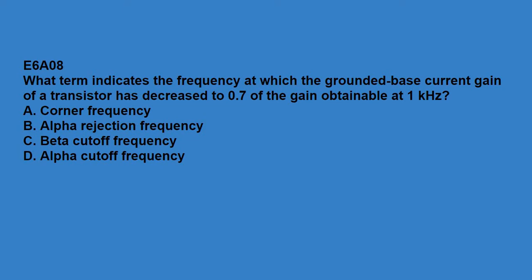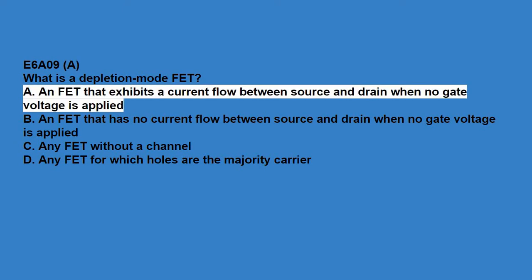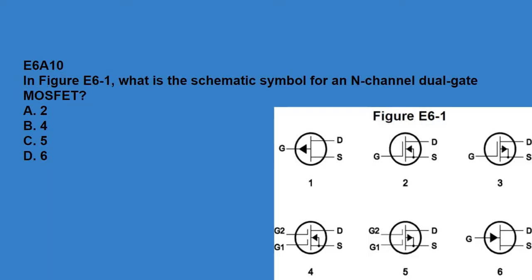E6A08: what term indicates the frequency at which the grounded base current gain of a transistor has decreased to 0.7 of the gain obtainable at 1 kHz? Alpha cutoff frequency. E6A09: what is the depletion mode FET? An FET that exhibits a current flow between the source and drain when no gate voltage is applied. E6A10: in figure E6-1, what is the schematic symbol for an N-channel dual gate MOSFET? Answer is 4.